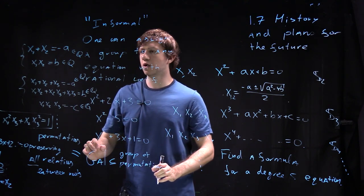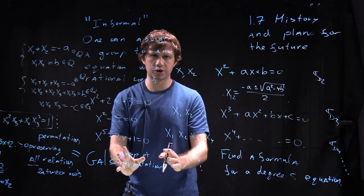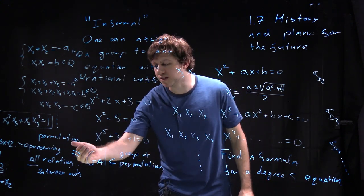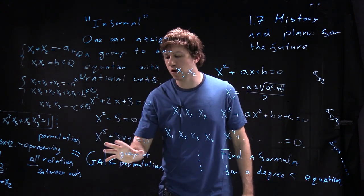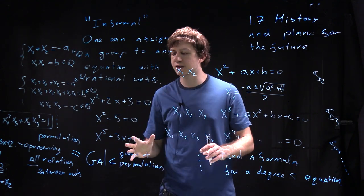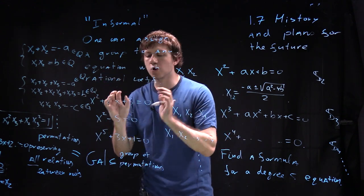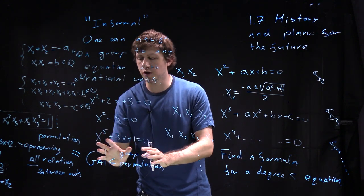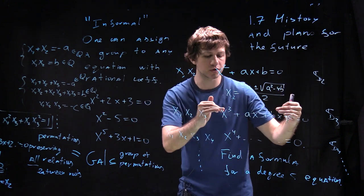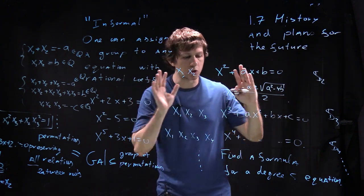and for a very general equation it will be actually the whole group of permutations. And so in Galois theory we study this group of symmetries and one can show that if there is a formula for roots of an equation using these radicals then this group will be very special which is called solvable and one can show that for many equations their groups are not solvable but if you take degree 2, 3, 4 every group is solvable and so you can solve this kind of equations.